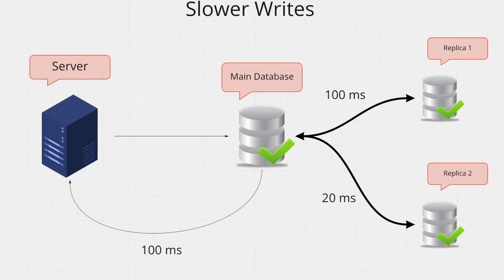Let's look at an example. Say you have two replicas — one in the US and one in Europe — and your main database is in Asia. The two replicas take different times to confirm that they received the data: one replica takes around 100 milliseconds to confirm while the other takes 20 milliseconds. So even though your main database has written the data successfully, you still have to wait 100 milliseconds before your server can move on to the next request. With two replicas this is already noticeable — imagine when you have more, because this delay might be much, much longer.